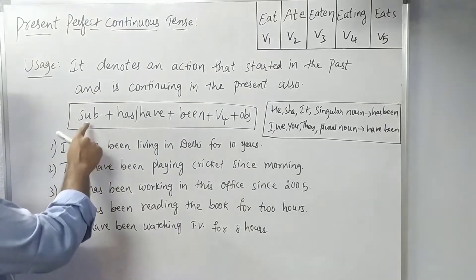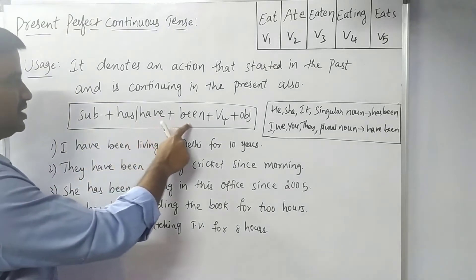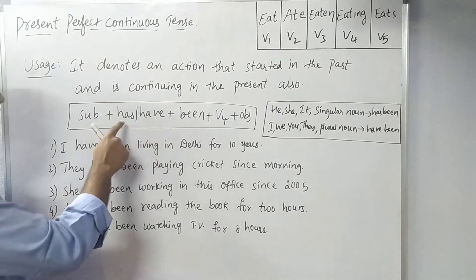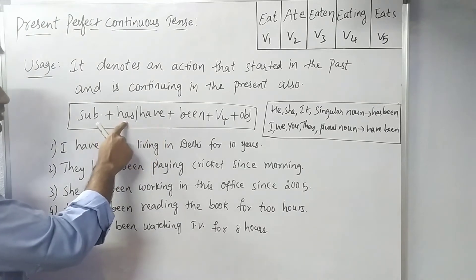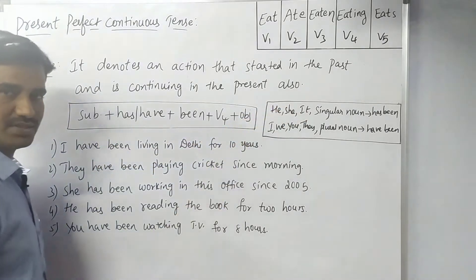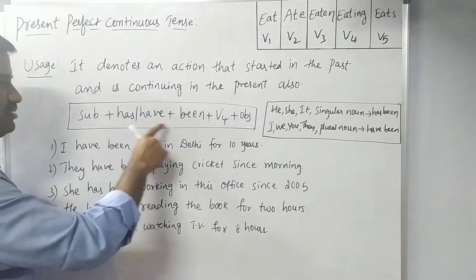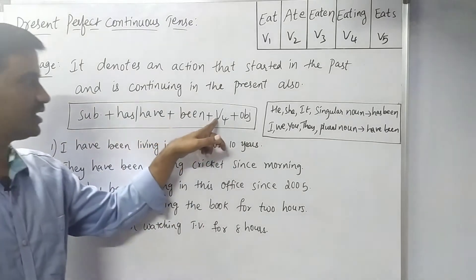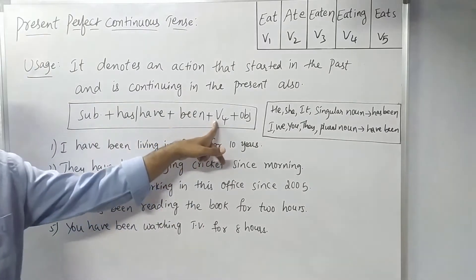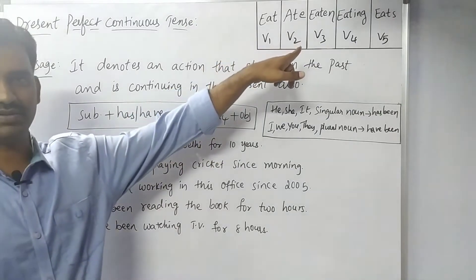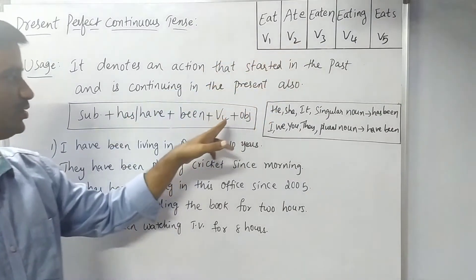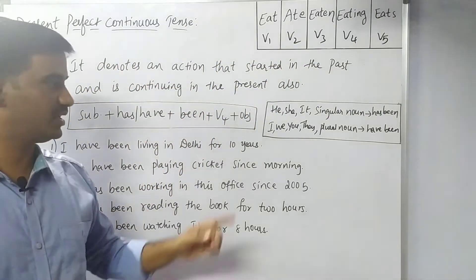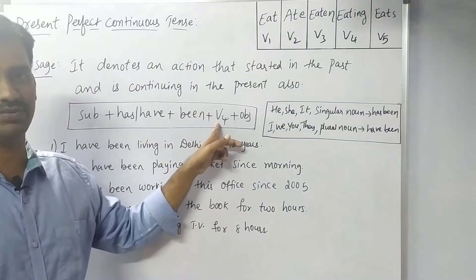Here is the structure: Subject + has or have + been + V-ing + object. We use 'has' with singular subjects and 'have' with plural subjects, plus 'been.' And here, there is a V-ing form. If it is continuous, there is a V-ing word.